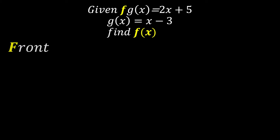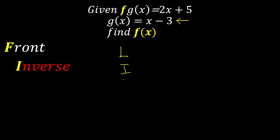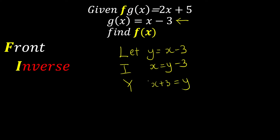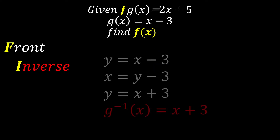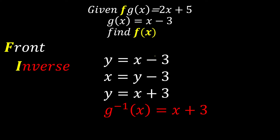The second step is I — inverse. We inverse the normal function, which is g(x) = x minus 3. To find the inverse, let y equal the function, interchange x and y, then solve for y. The result is y equals x plus 3. So the inverse function is x plus 3. Step two is done.